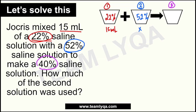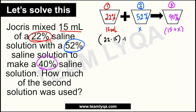So, yung resulta ay 40% times the quantity (15 plus x). Ibig sabihin, medyo mas complicated na siya kasi dalawa na yung terms na nasa loob ng parentheses. Kung i-solve ko ito, magiging: 22 times 15, tapos plus 52 times x, equals 40 times (15 plus x).